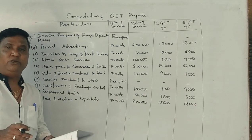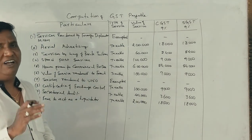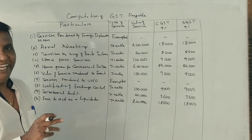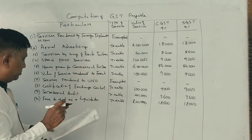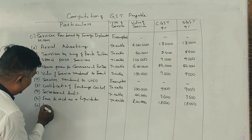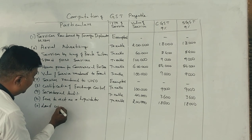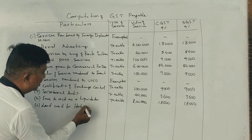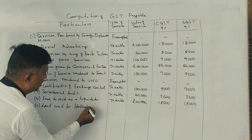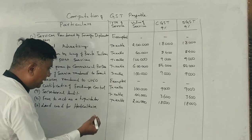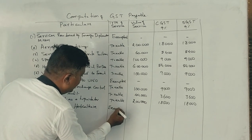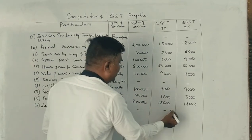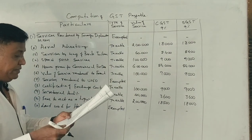Vacant land used for horticulture, sericulture, and agriculture — exemption applies. Land used for horticulture is a fully exempted service — nil (dash).